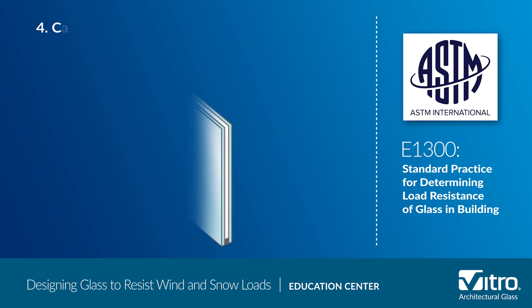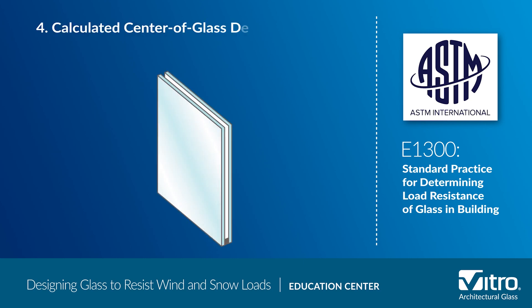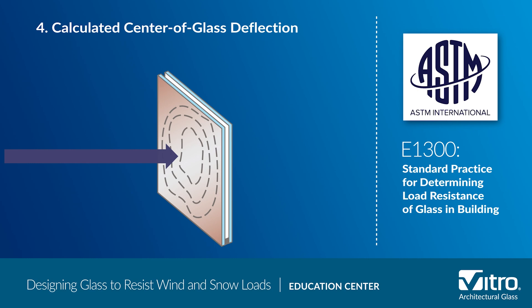Fourth, calculating center of glass deflection, as excessive glass deflection can result in edge pullout or may cause concern to the building's occupants when they see glass movement greater than three-quarters of an inch.